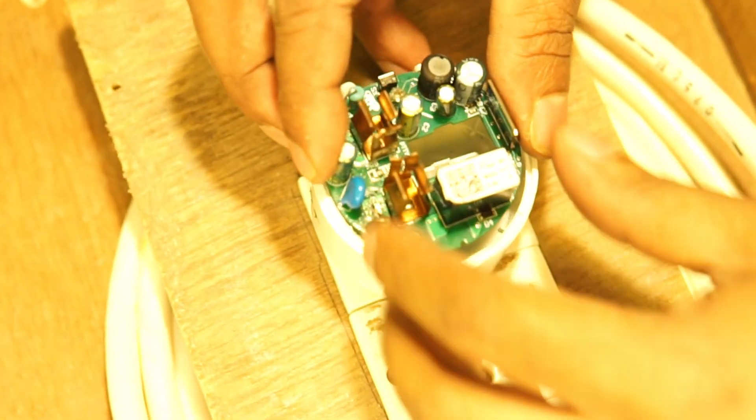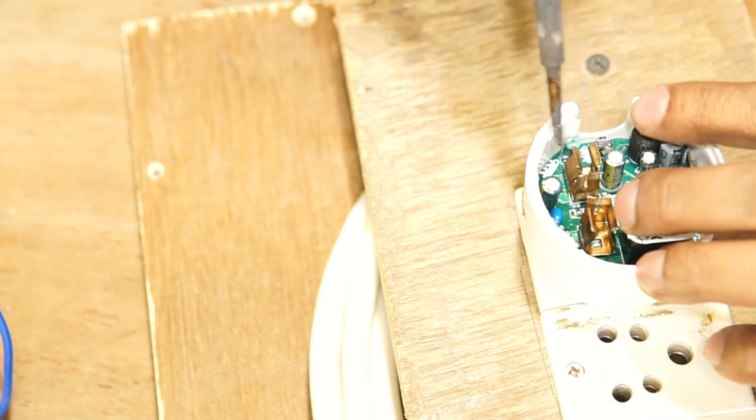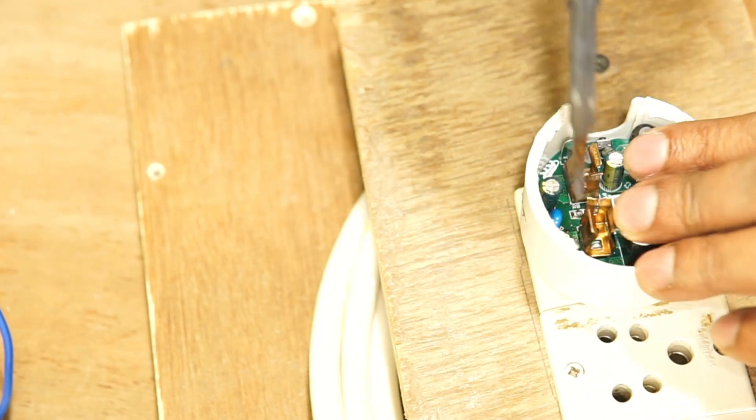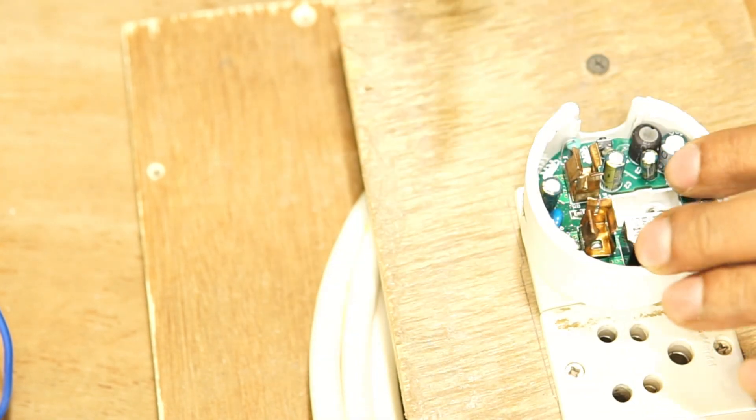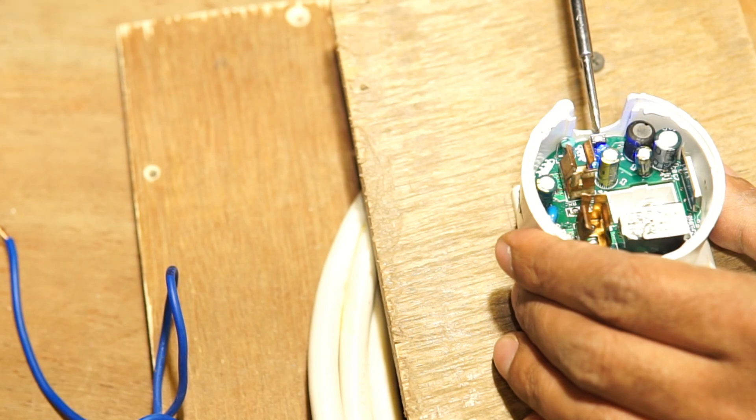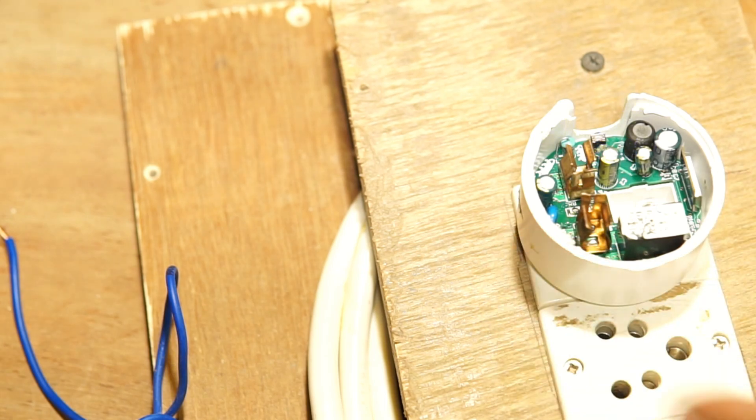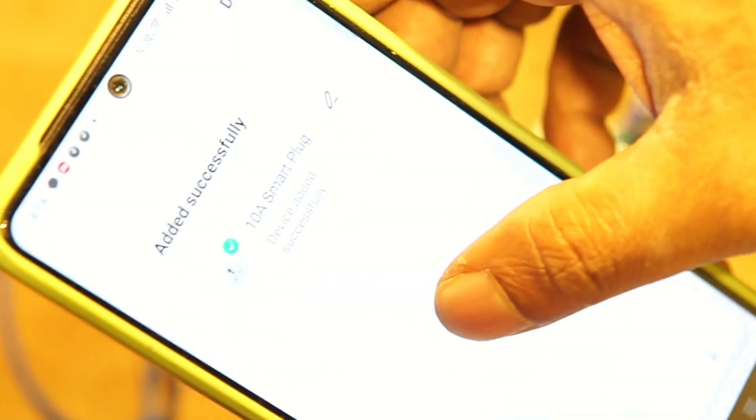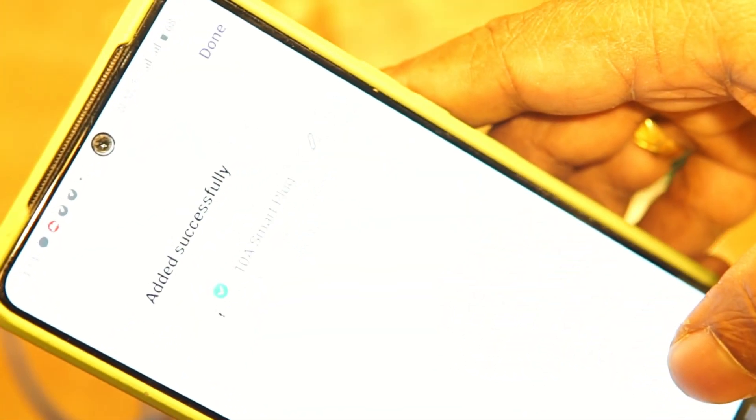Then placed the board back in the chamber and soldered the board to the socket terminals. Then I activated the setup mode and tried to connect the device to my home Wi-Fi network. This time the device was added to the network effortlessly and was working fine.